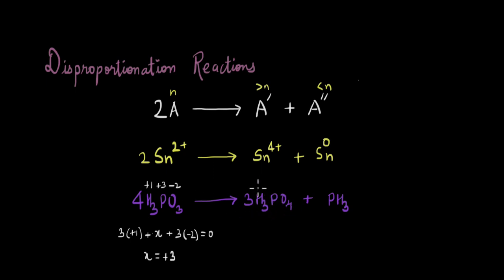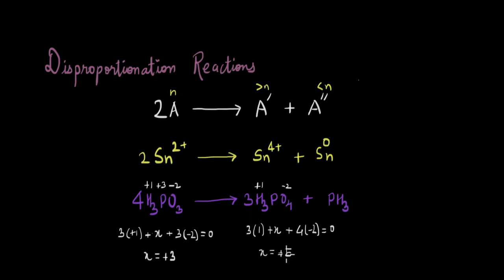For H₃PO₄: 3(+1) + x + 4(−2) = 0, which gives x = +5. For PH₃: with 3 hydrogens at +1 each, phosphorus has an oxidation state of −3. So phosphorus went from +3 in H₃PO₃ to +5 in H₃PO₄ and down to −3 in PH₃ — one higher and one lower — making this also a disproportionation reaction.